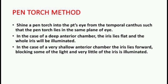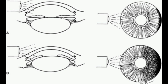Let's see the procedure about how to assess the anterior chamber's depth using a pen torch. At first, ask the patient to look straight. Shine a pen torch into the patient's eye from the temporal canthus. The position of the torch should be exactly the same as which is shown in the diagram.